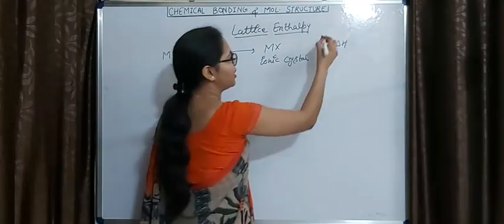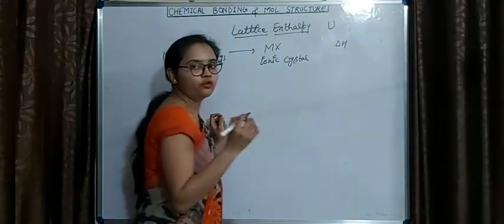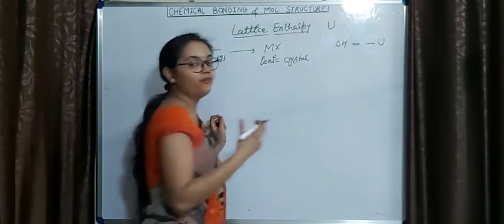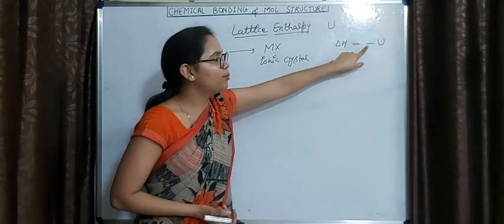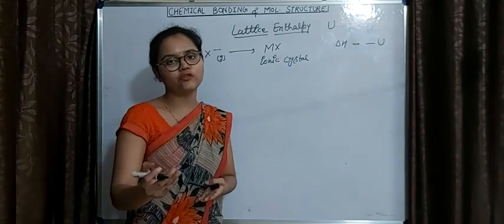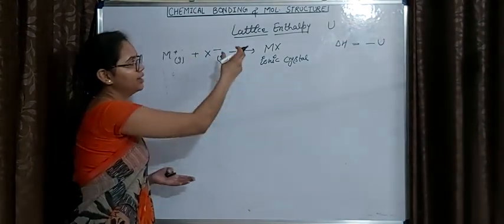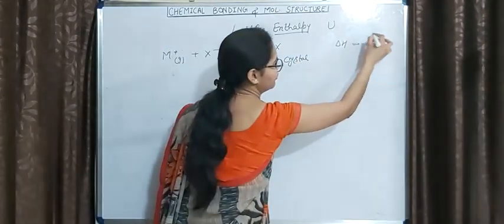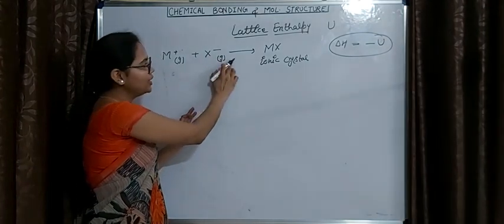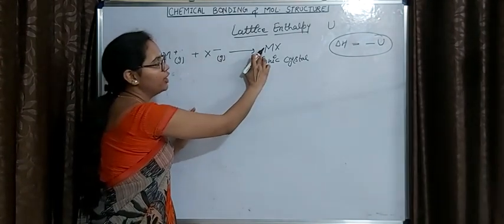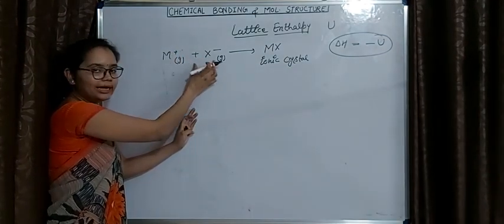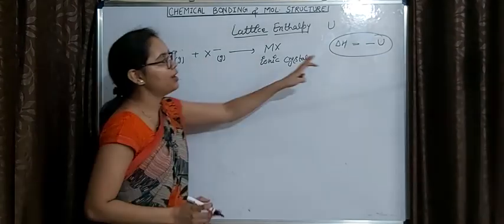Lattice enthalpy is represented by U. We can write delta H equals minus U. The minus sign is used because it represents the evolution of energy. So we can also define lattice enthalpy as: the energy evolved during the formation of one mole of ionic crystal from its constituent ions in gaseous state.